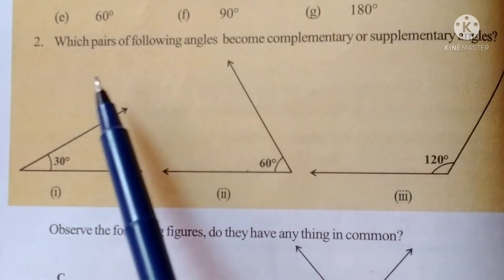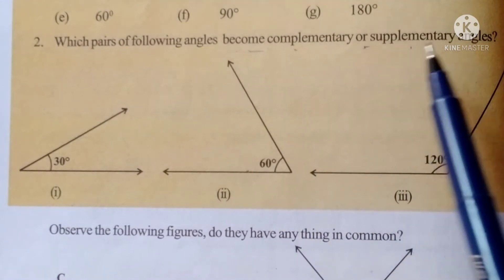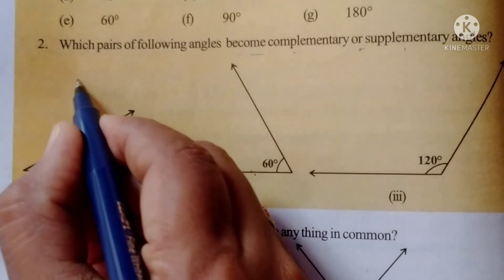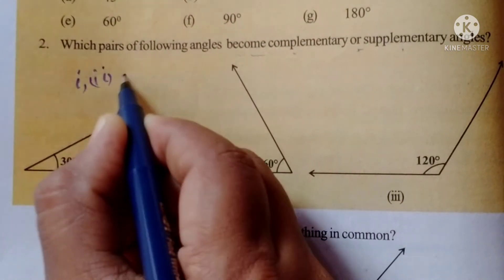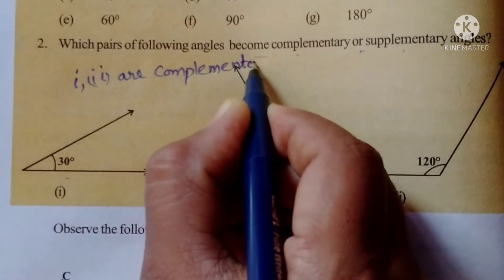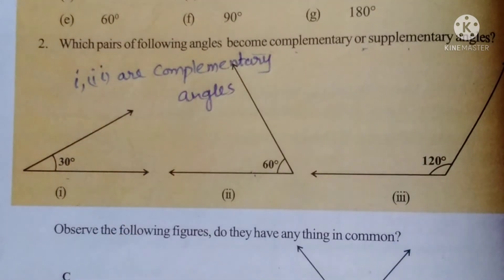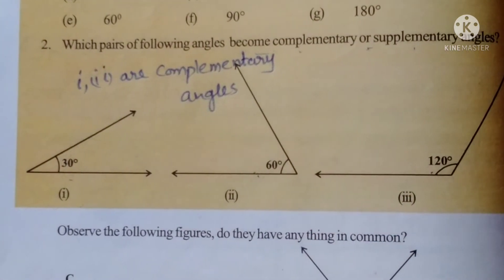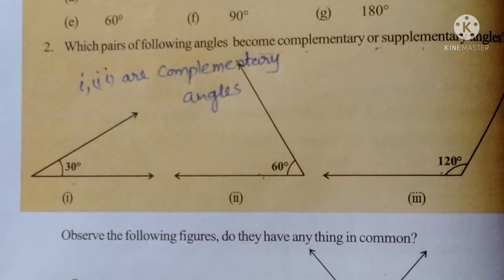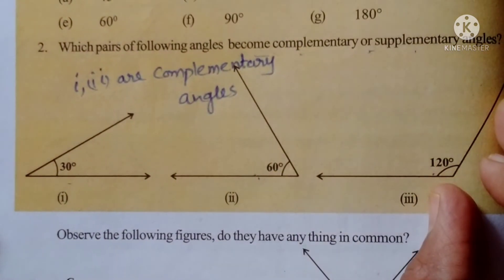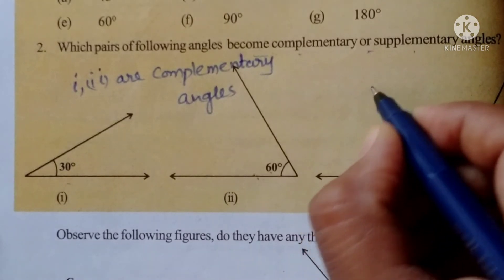Second question: which pair of the following angles are complementary or supplementary? Complementary means the sum of two angles should equal 90. So 30 plus 60 = 90, so angles 1 and 2 are complementary angles. And 120 plus 60 = 180, so angles 2 and 3 are supplementary angles.